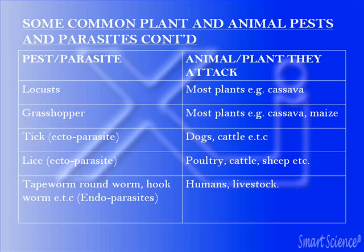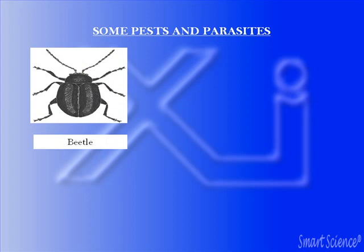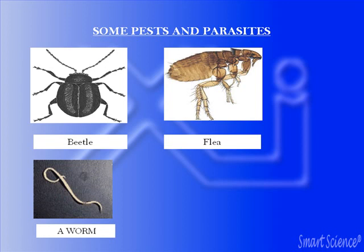Now let's look at some pests and parasites and how they look. This is a beetle — it destroys mostly tuber crops like yams, water yams, and cocoyam by boring holes into the tubers and eating the content. This is the flea — we talked about the water flea when discussing guinea worm. And this is a typical worm; they live inside their hosts.